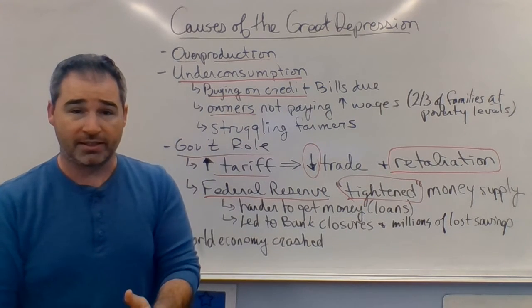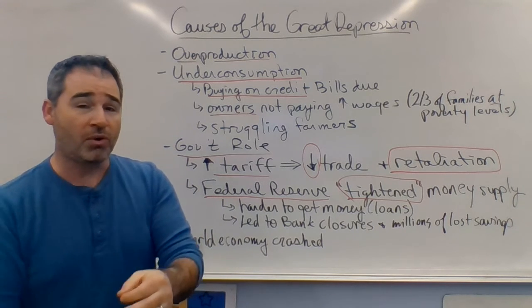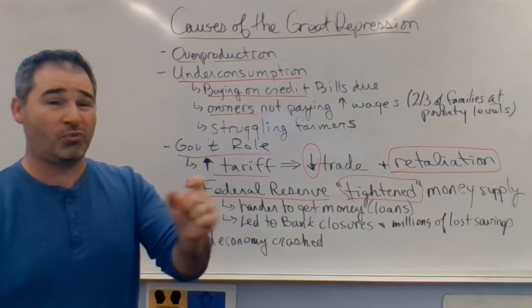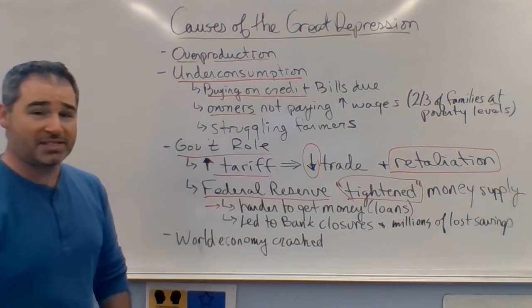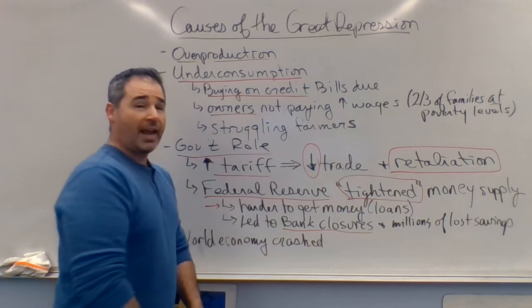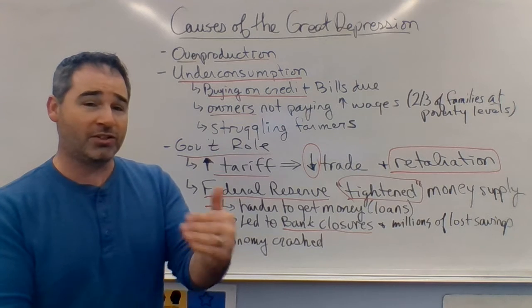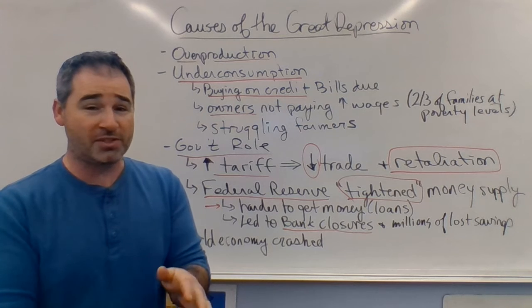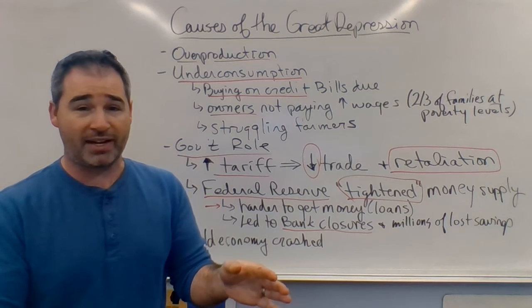Tightening the money supply made it harder to get money and harder for businesses to stay open because they couldn't get loans. Their response to a bad money policy before the depression was to have an even worse money policy after it started. Banks also had to close, and when banks closed that would often lead to runs on the bank — all the money being taken out. Bank closures occurred and millions in savings were lost, because this is before the FDIC. Before that protection existed, if the bank closed, all the money you had in your savings account was just gone.